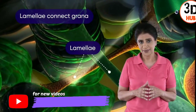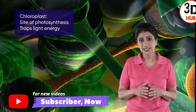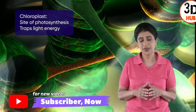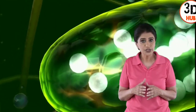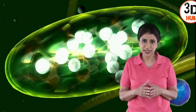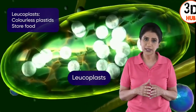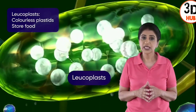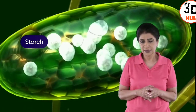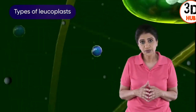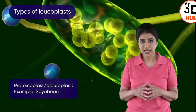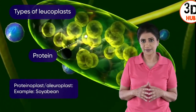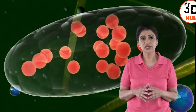The grana are connected with each other by a network of membranous tubules called lamellae. Chloroplasts are the sites of photosynthesis — they absorb light energy used to prepare food. The cells of storage organs of plants contain another type of plastid called leukoplasts, which are colorless.